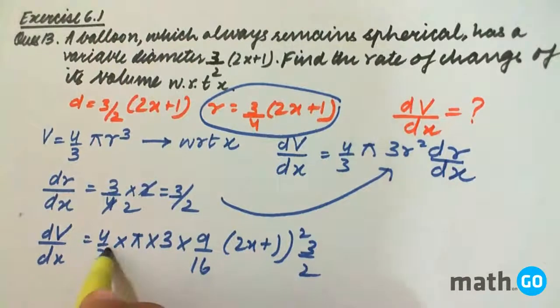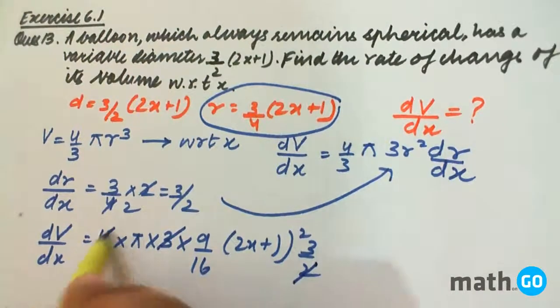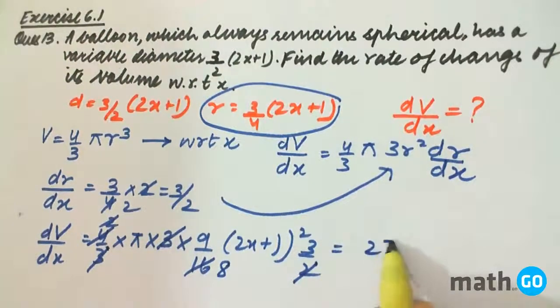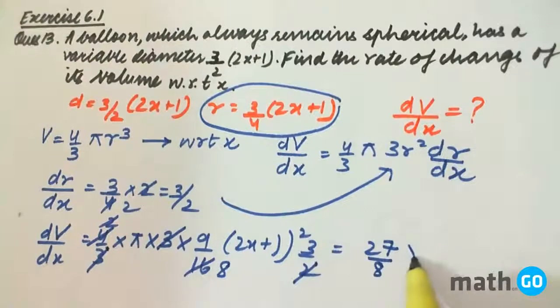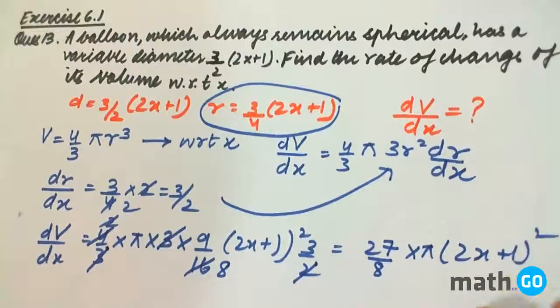So it is simply, the 3 is cancelled by this and this is cancelled by this. So we are left with 8. Our final answer becomes 27/8 into π into (2x+1)².